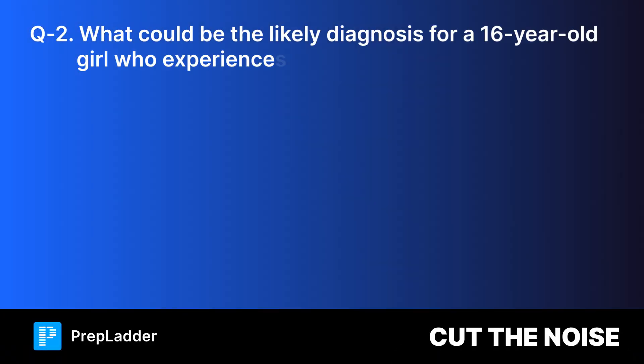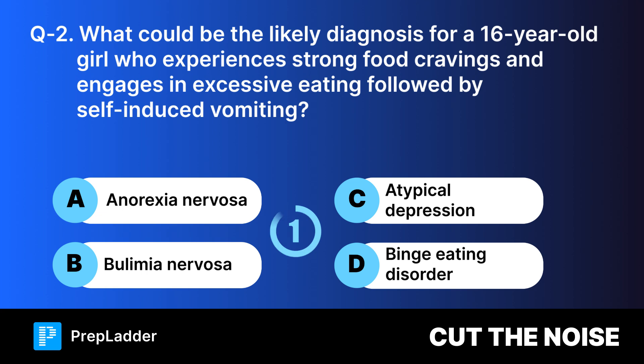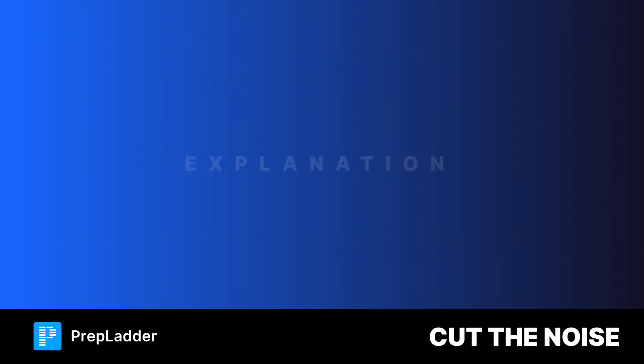Question number two. What could be the likely diagnosis for a 16-year-old girl who experiences strong food cravings and engages in excessive eating followed by self-induced vomiting? Your options are, and the correct answer is bulimia nervosa. Here is the explanation.